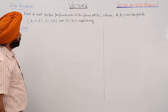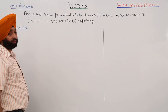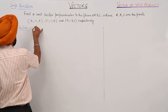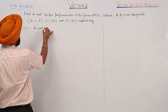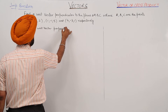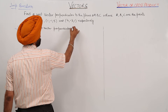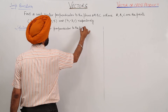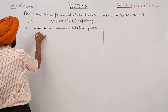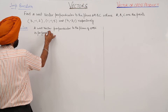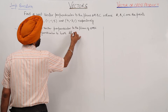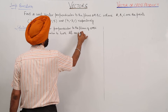We have to find a unit vector perpendicular to the plane of triangle ABC, where A, B and C are the points (3, -1, 2), (1, -1, -3) and (4, -3, 1) respectively. A unit vector perpendicular to the plane of triangle ABC is perpendicular to both vector AB and vector AC.